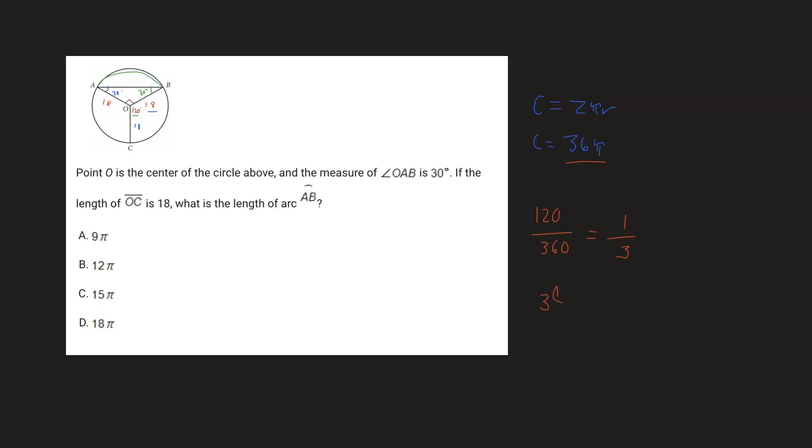So 36π, let's just divide this by 3 because we know that this angle represents a third of it. And so we can just do 36 over 3, which is 12, and keep the π so we don't have to simplify it completely.